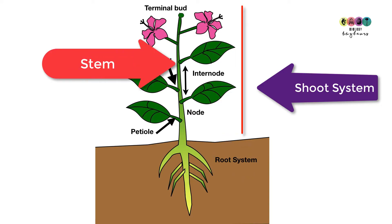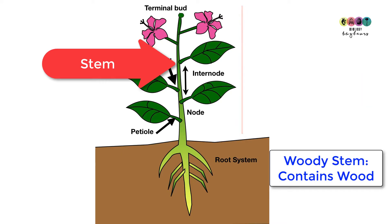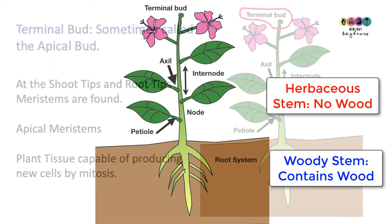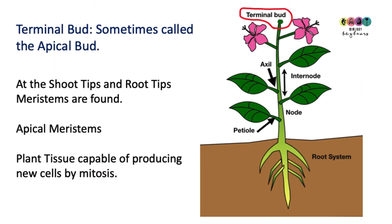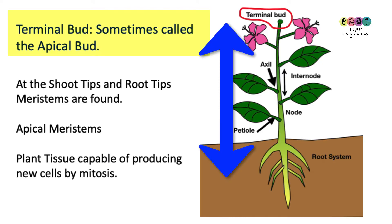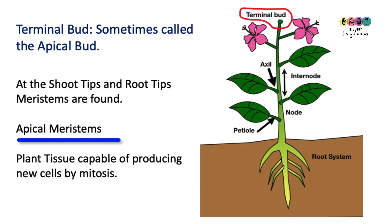The main part of the shoot is the stem. You can have a woody stem that contains wood, or a herbaceous stem which does not contain wood. At the top of the plant is the terminal bud, sometimes referred to as the apical bud. Plants generally grow by getting taller and longer, so the root tips and shoot tips are growing because of the presence of apical meristems.